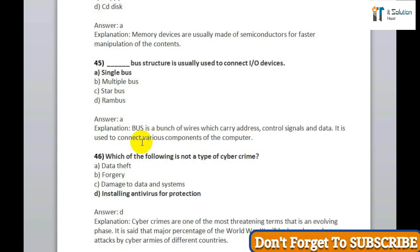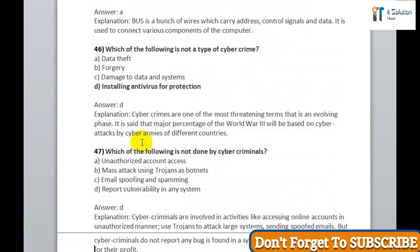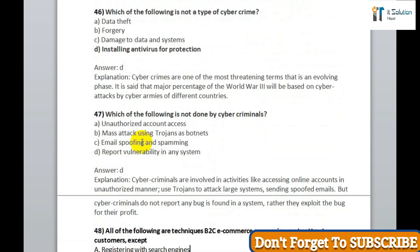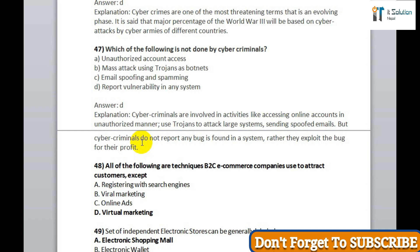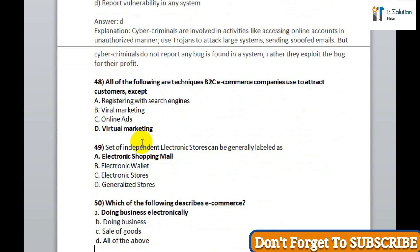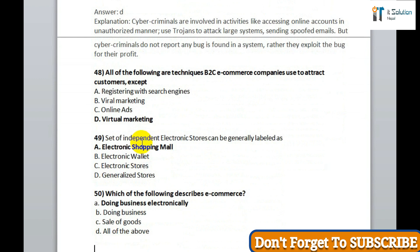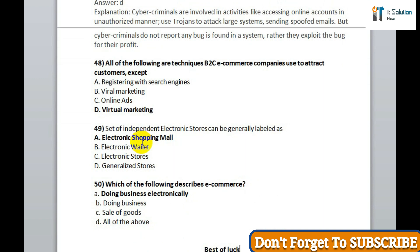Question 46: which of the following is not a type of cybercrime? Correct answer is option D, installing antivirus for protection. Question 47: which of the following is not done by cybercriminals? Correct answer is option D, report vulnerability in any system. Question 48: all of the following are techniques B2C e-commerce companies use to attract customers except — correct answer is option D, virtual marketing. Question 49: a set of independent electronics stores can be generally labeled as an electronic shopping mall. Question 50: which of the following describes e-commerce? Correct answer is doing business electronically. Thanks to all for watching — please like, comment, and share this tutorial. Thank you.